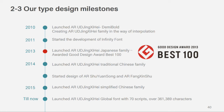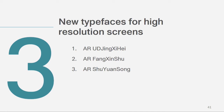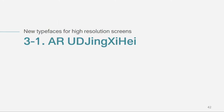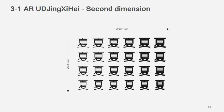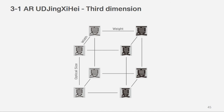So this is our schedule: from 2010 we developed Jing Si Hei, and in 2013 we received Japan's Good Design Award, Best 100. Then we developed another typeface — one is called Fang Xinshu, the other is Shu Yuan Song. I'll briefly introduce our three typefaces. For Jing Si Hei, we have three design spaces: the weight axis, the width axis, and optical size.